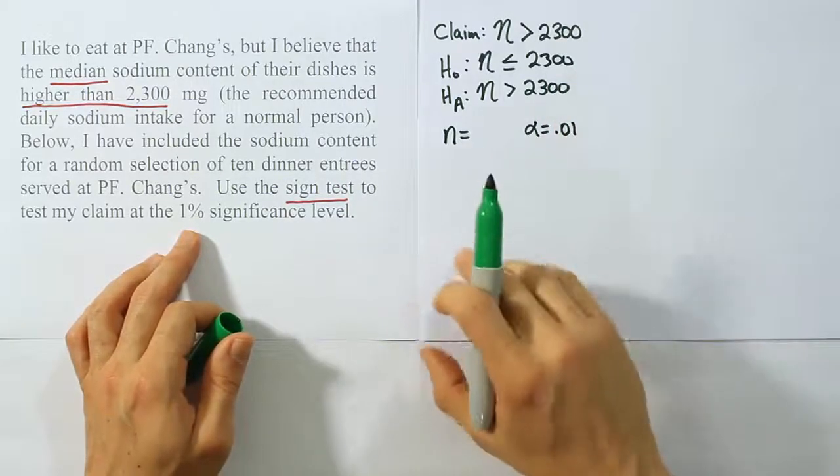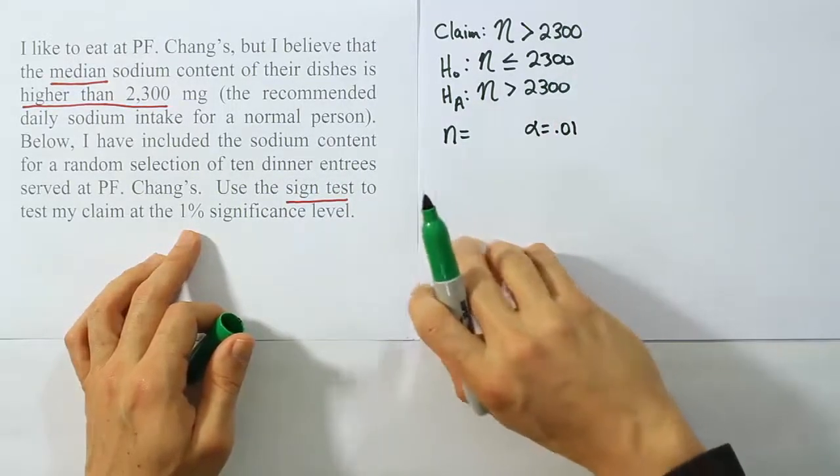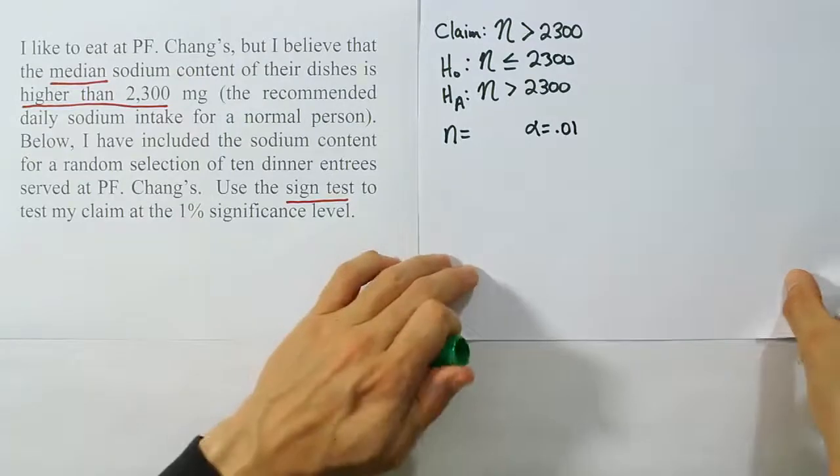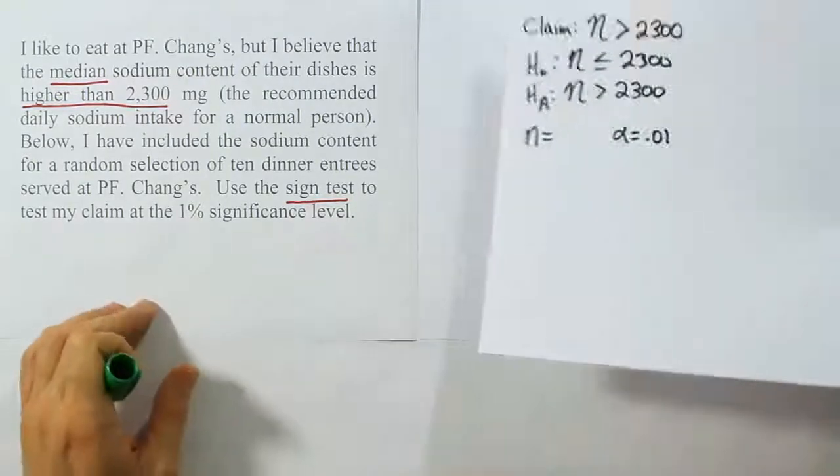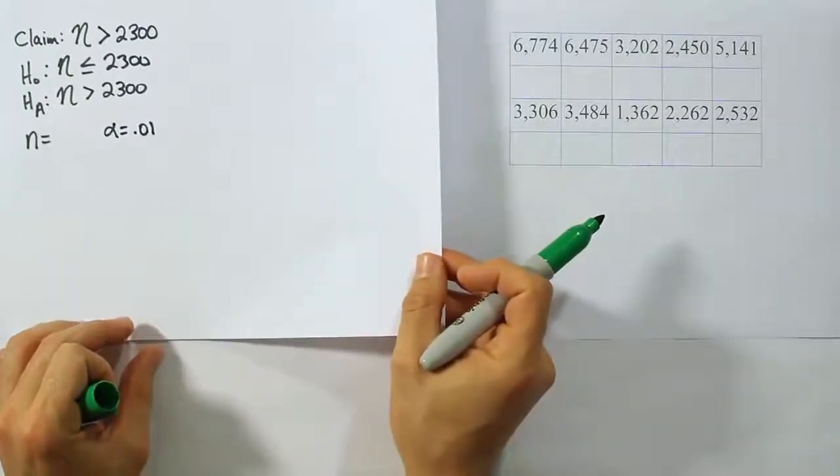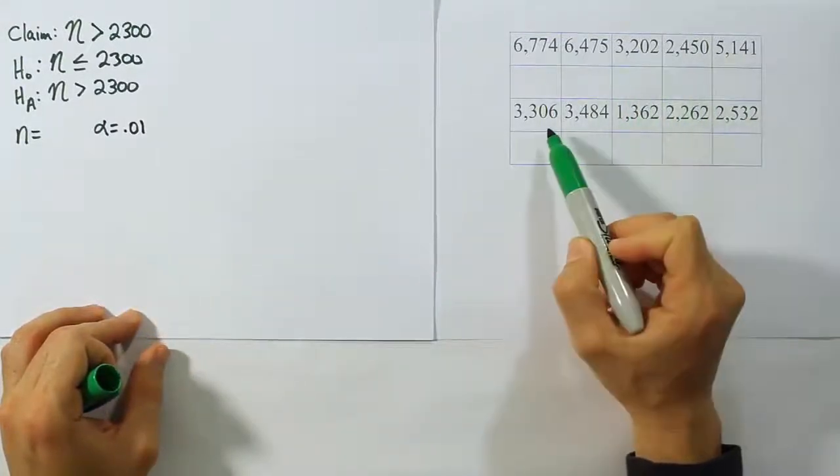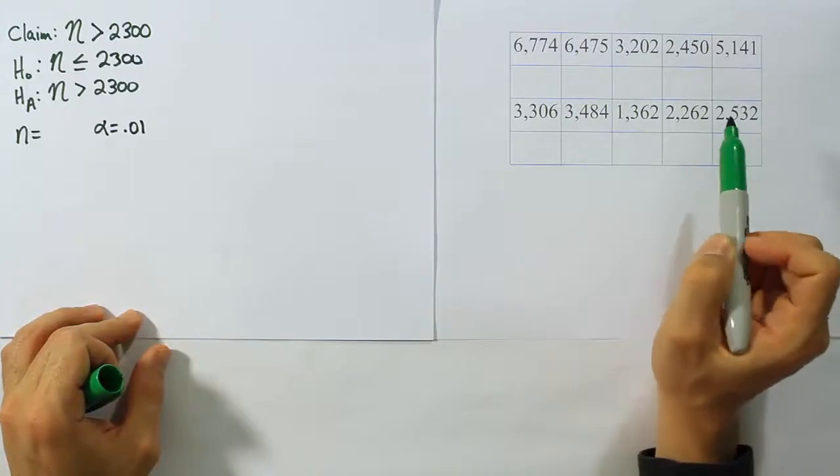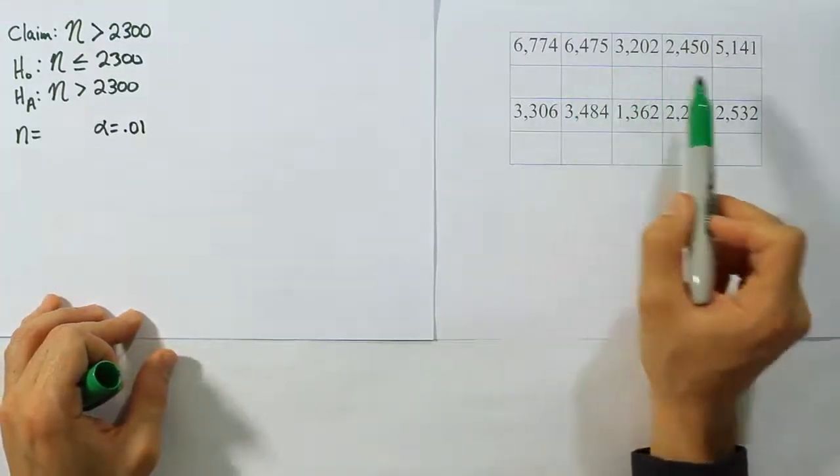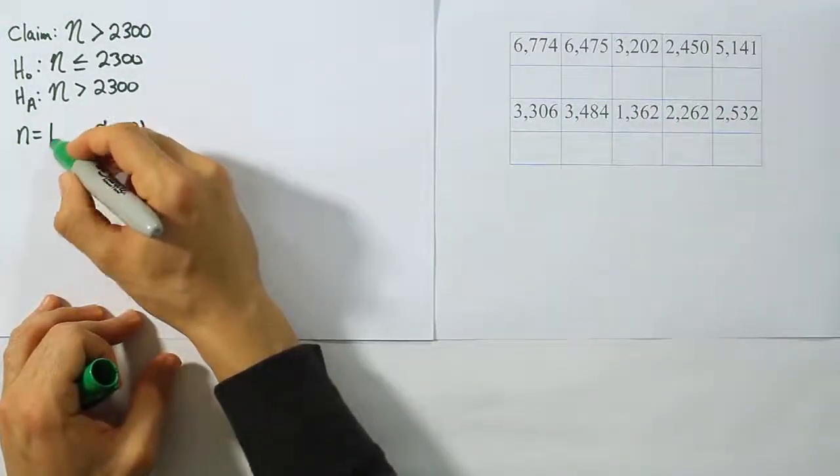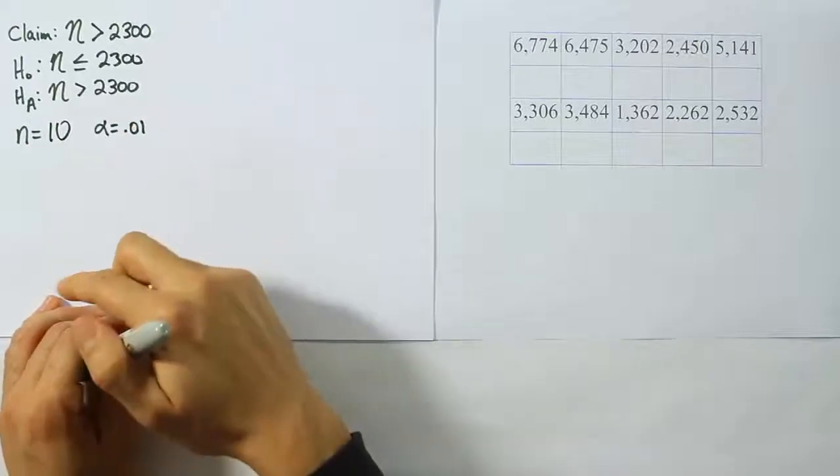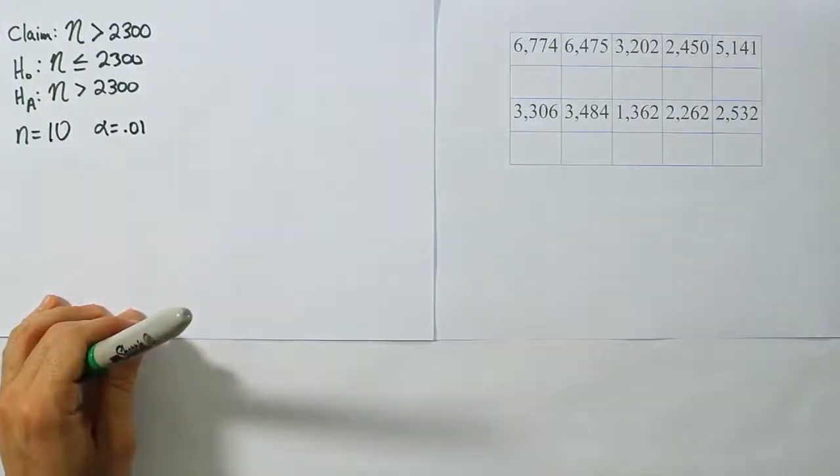As far as the sample size goes, it says we have 10 dinner entrees, so n is probably 10, but I want to check to make sure that I don't have any ties before I go ahead and just say that it's 10. So let's check to see if there are any ties present. When I look at the actual data, I don't see any 2300s, so there are no ties. So in that case, I will say n is the actual 10 values that we started with. I don't have to throw out any values because there are no ties here.